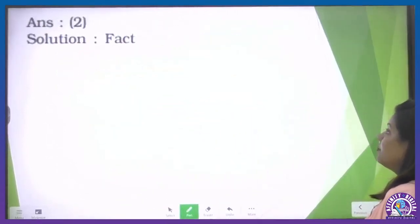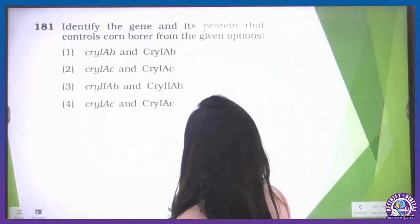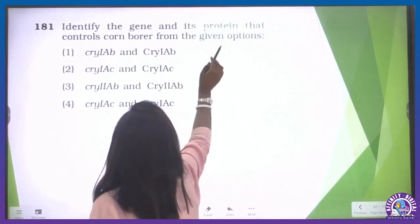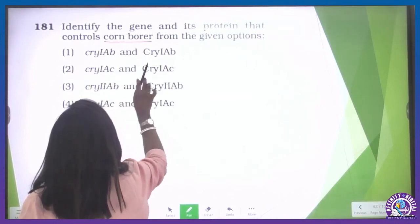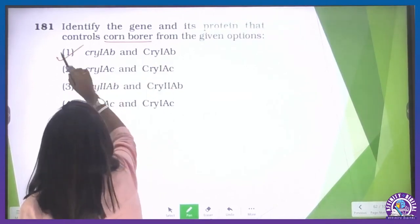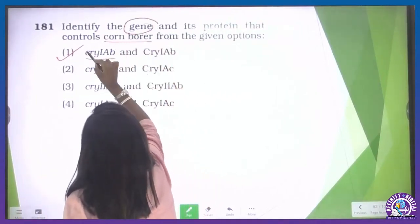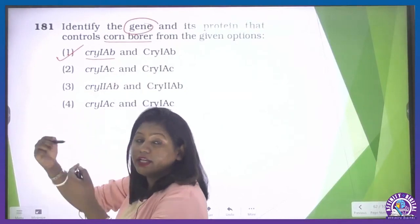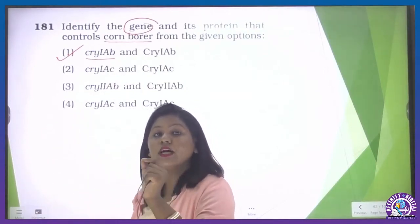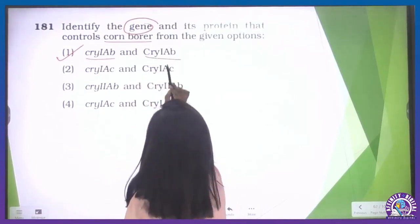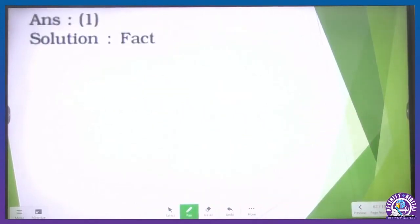Identify the gene and its protein that controls corn borer. The gene is cry 1AB — written in small letters as 'cry'. The protein it encodes is the crystal protein — written in capital letters, which is a protoxin. So the correct option is cry 1AB protein. The correct option is option 1.